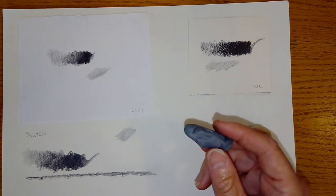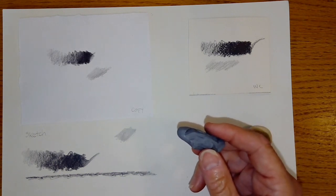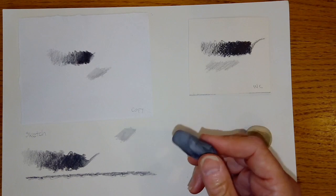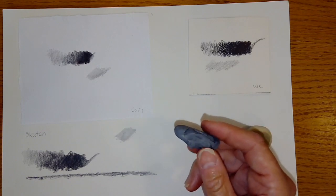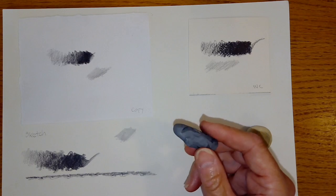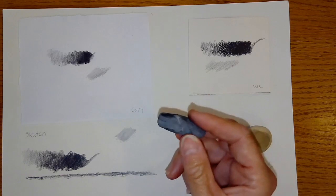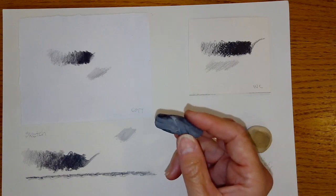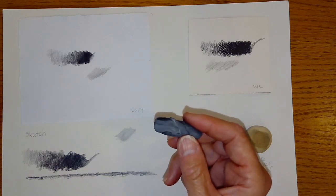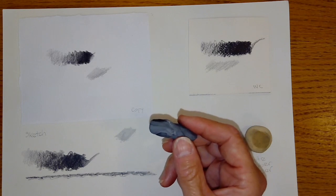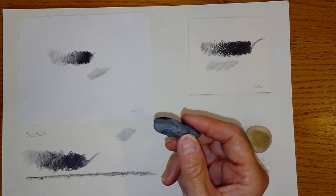Now if you have a very light application of graphite, particularly with a lighter pencil, as in an H pencil, F, HB, something like that, you probably can take all of that graphite away depending on how much pressure you've applied to that graphite.